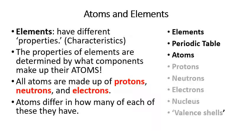All atoms are made up of protons, neutrons, and electrons. The only difference between them is how many of each they have — that determines whether you are a helium atom or a copper atom.